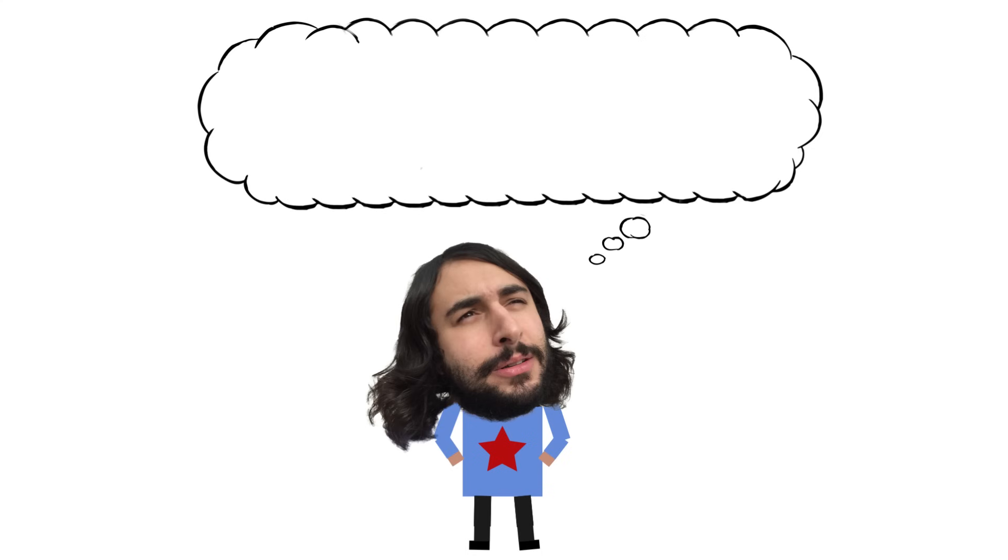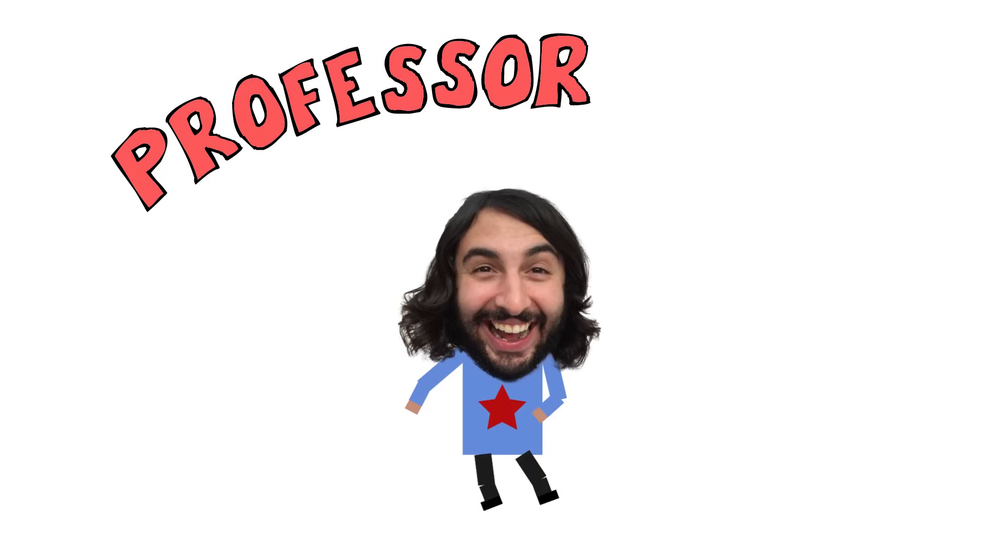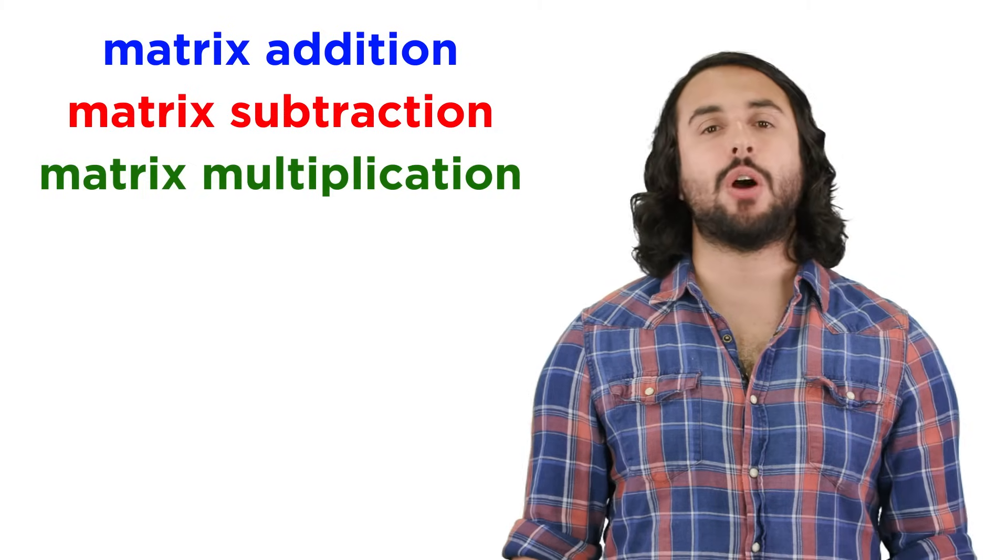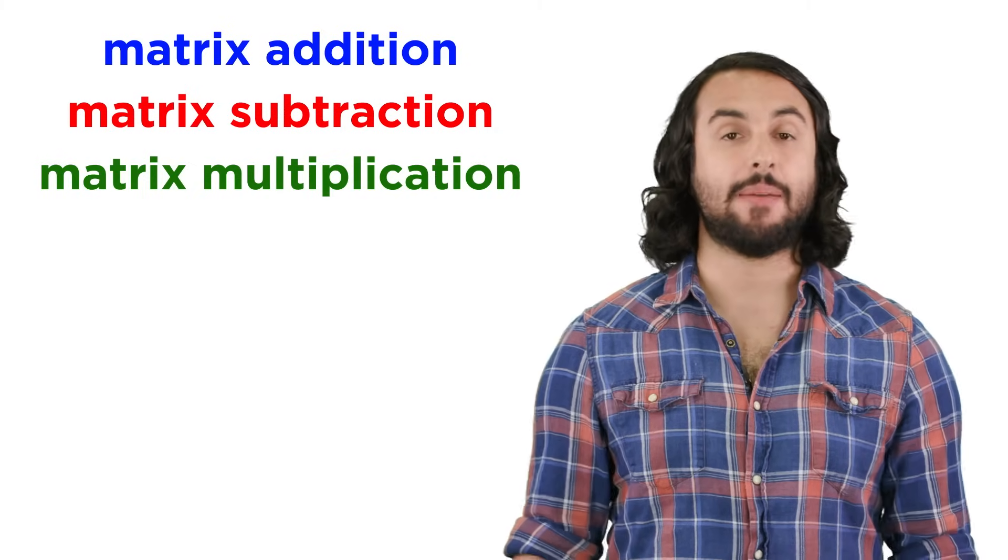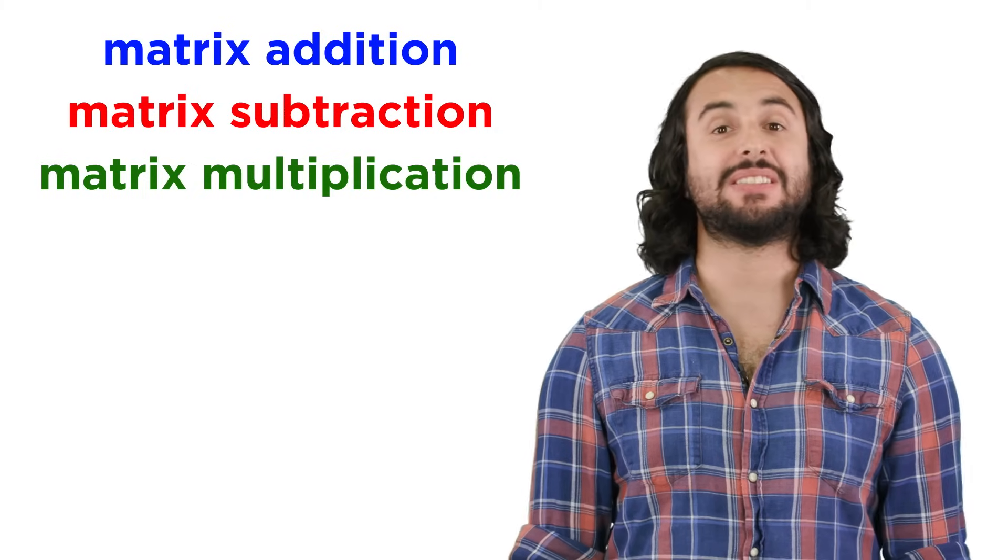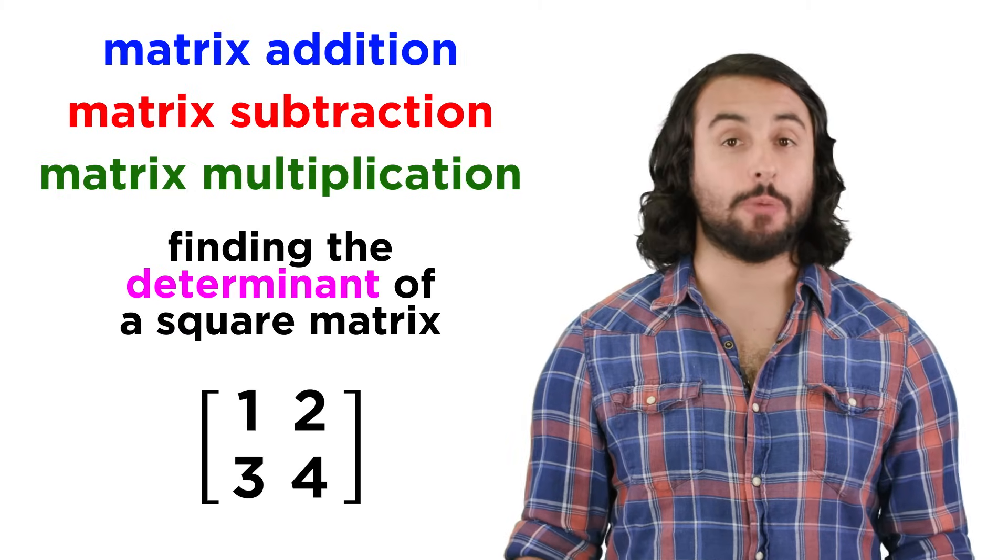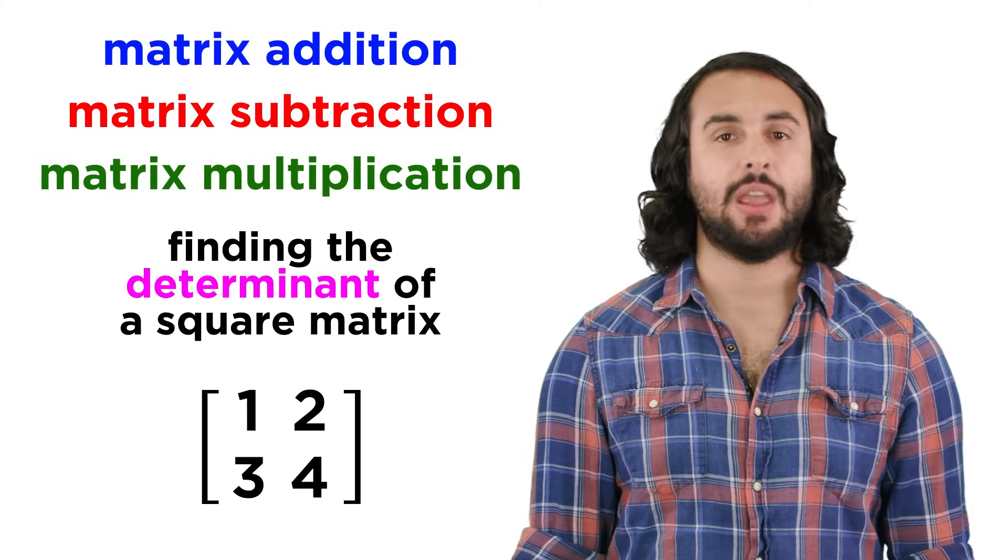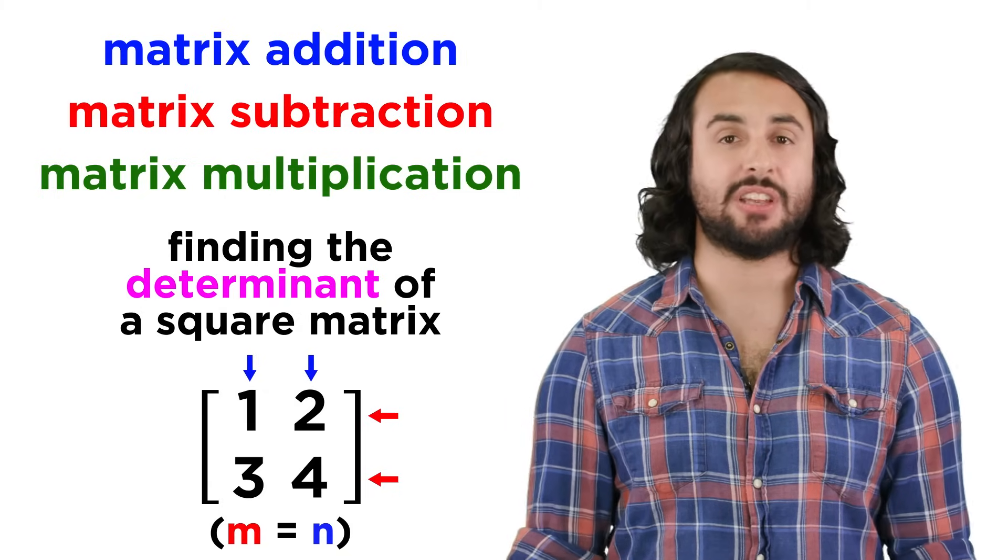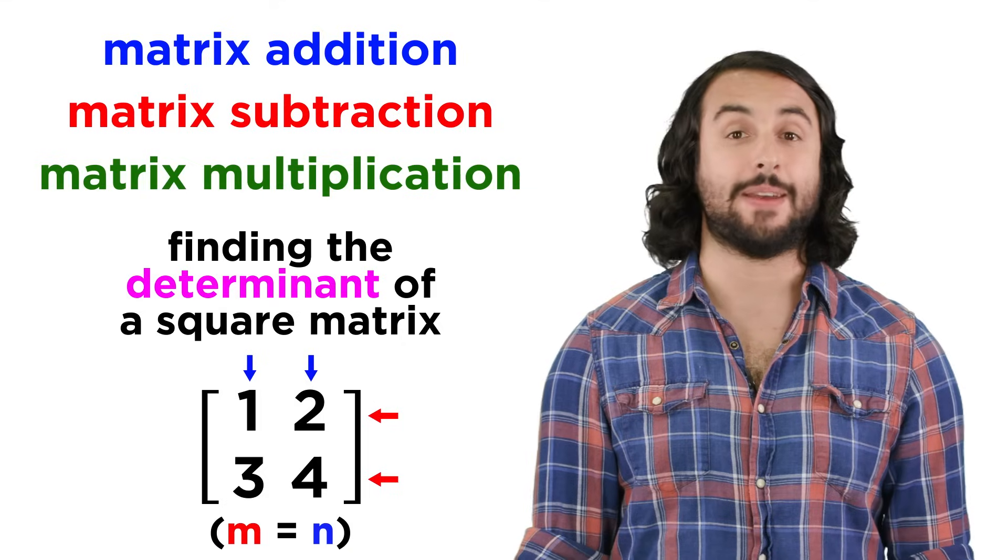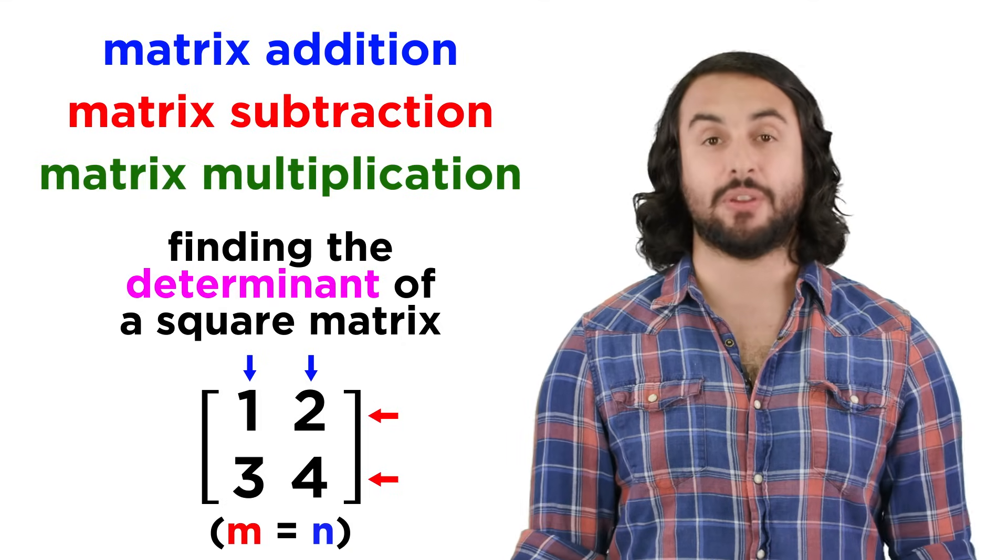Professor Dave again, let's talk determinants. We now know how to add, subtract, and multiply matrices, so it's time to learn one more thing we can do. We need to be able to find the determinant of any square matrix. Let's recall that a square matrix is any matrix with an equivalent number of rows and columns, whether two or ten, so let's learn this algorithm now.